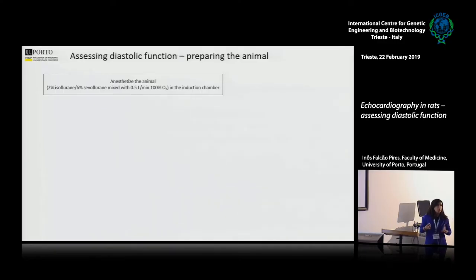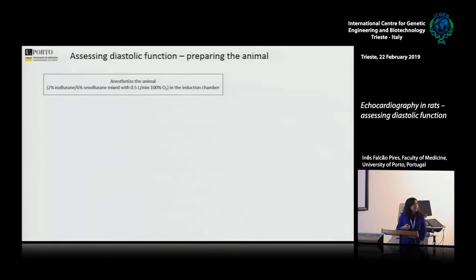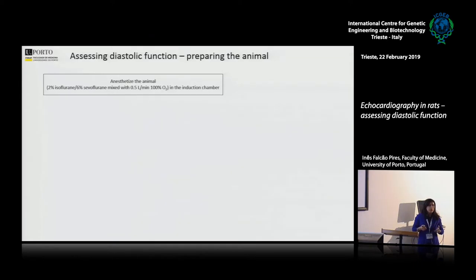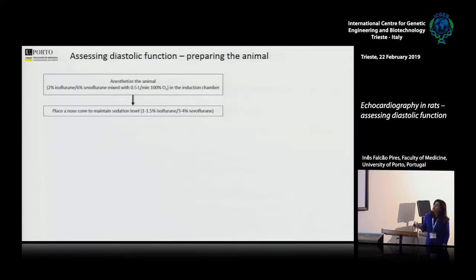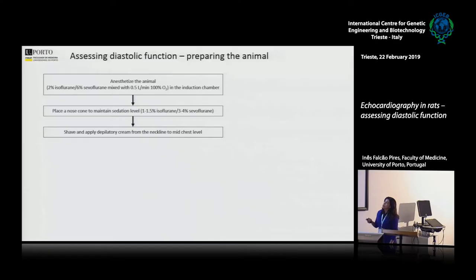The beginning of this session will be very practical — I will provide a step-by-step checklist for how to do echocardiography. You will start by anesthetizing the animal. Usually, halogenated gases are preferred because they are very reversible, you can increase or decrease heart rate, and they are the least cardio-depressant anesthetic. You would start with a percentage slightly higher than what you need, mixed with oxygen, then place a nose cone on the animal and reduce the percentage of anesthesia. Then shave and apply depilatory cream from the neckline to the mid-chest level.